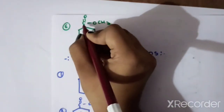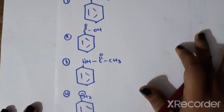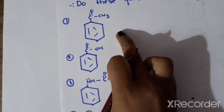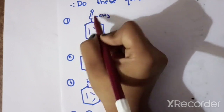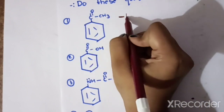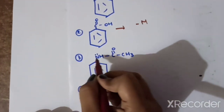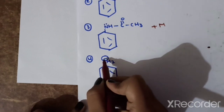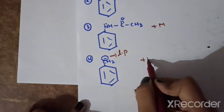If the atom attached to the ring is an electronegative atom, it will be a minus M group. Ring attached to C double bond — this is an electronegative group, so the effect is minus M. Similarly, it is minus M. Lone pair of electrons attached to an atom is a plus M group. A negative charge on an atom means lone pair of electrons, so lone pair attached to an atom is plus M.